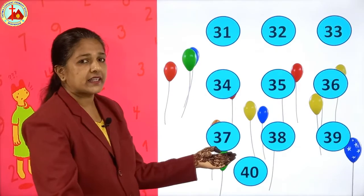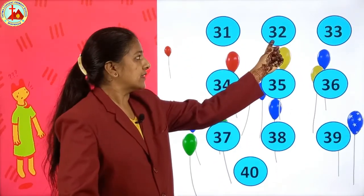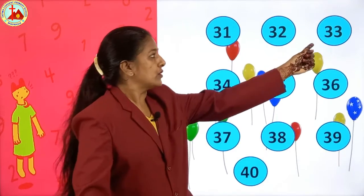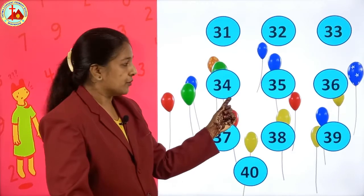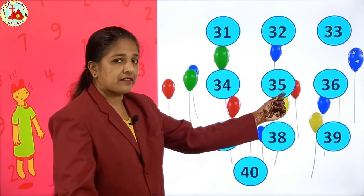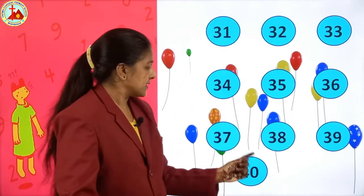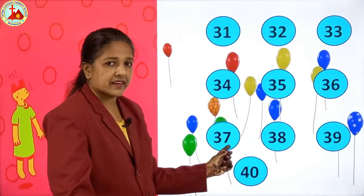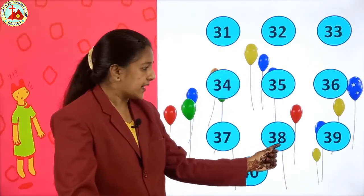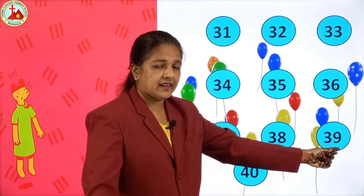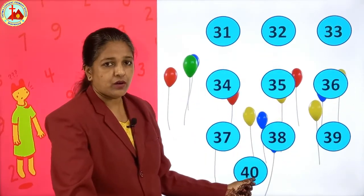And after 30: 3-1, 31. 3-2, 32. 3-3, 33. 3-4, 34. 3-5, 35. 3-6, 36. 3-7, 37. 3-8, 38. 3-9, 39. And 4-0, 40.